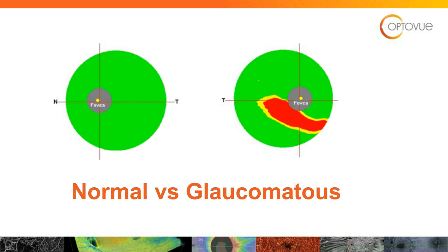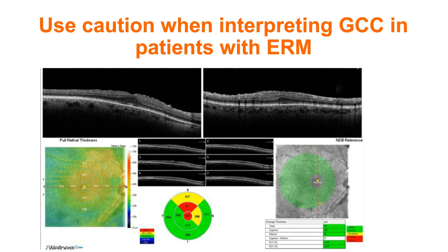Here's an example — normal on our left, glaucomatous on our right. But we have to be careful when using the ganglion cell complex — we can't use it in isolation, because any type of macular disease will throw off the results. An epiretinal membrane, macular degeneration, macular holes, or diabetic macular edema can all affect it. Be very careful that these conditions aren't throwing off your interpretation.